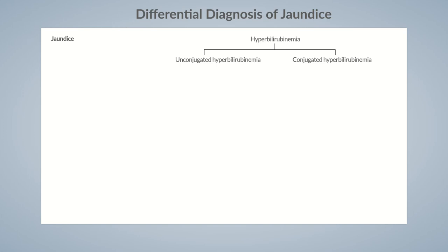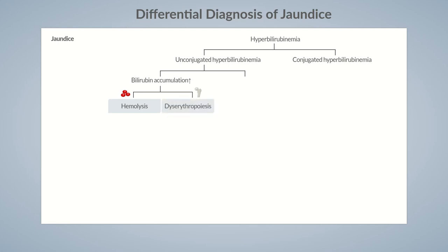If the hepatic capacity to conjugate bilirubin has been reached, indirect bilirubin accumulates. It's mainly caused by two types of disorders: hemolysis and dyserythropoiesis, which is the defective development of red blood cells. Defective conjugation of bilirubin by the liver also leads to increased indirect bilirubin levels. An example is Gilbert syndrome, an inherited disorder in which the liver can't fully process bilirubin due to a decreased activity of the UDP-glucuronosyltransferase enzyme.